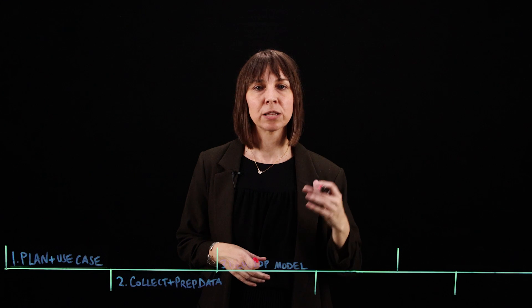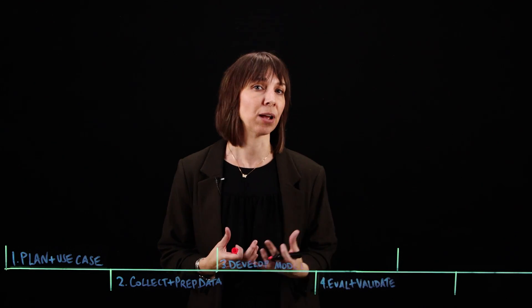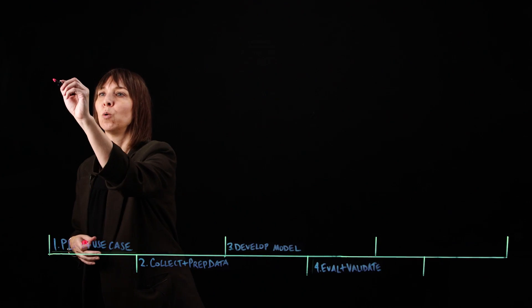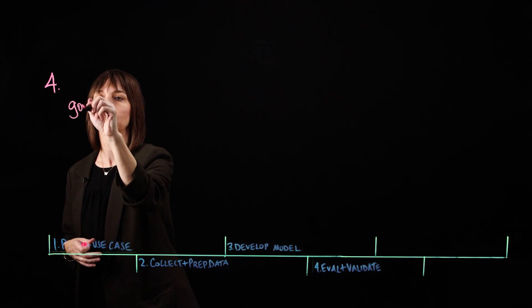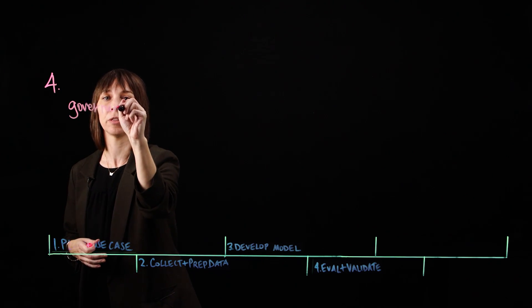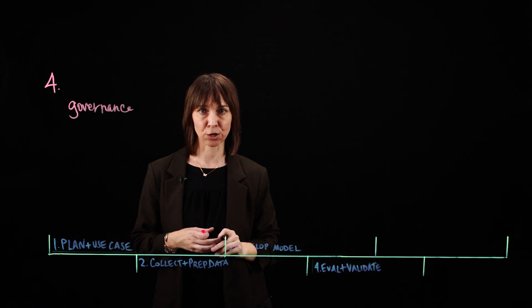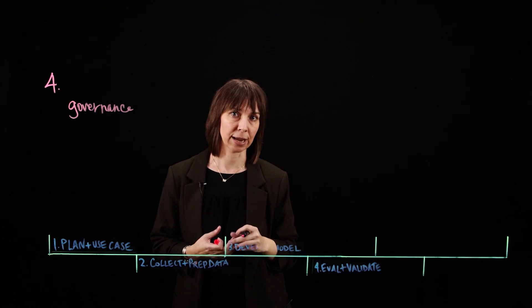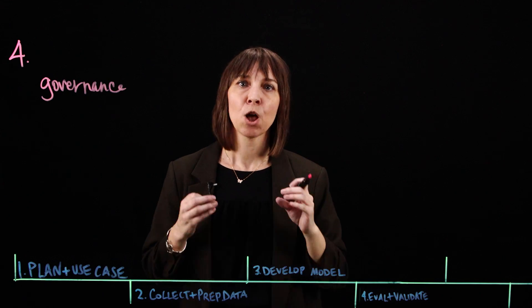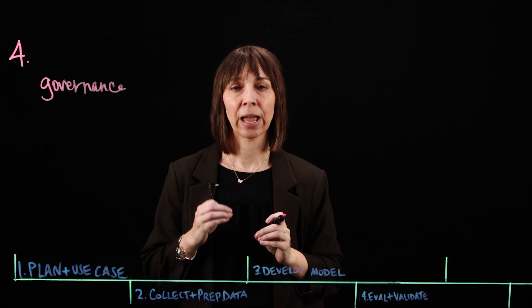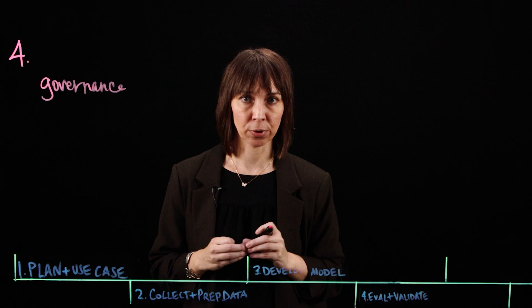Once we built our model, it's going to need to be evaluated and validated. We should build an AI governance review board to ensure that our model complies with regulations like the EU AI Act. We can check for accuracy, fairness, and bias by measuring performance across demographic groups and checking for diversity in outputs.